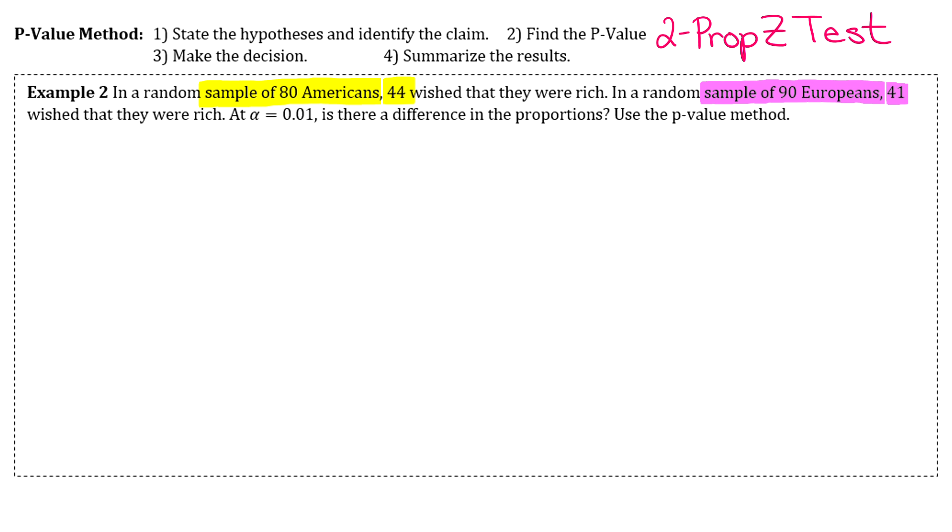Step one: our hypotheses. Our null hypothesis is always going to be that p1 equals p2. The question wants to know if there is a difference in them, so for the alternative I'll say that p1 does not equal p2, and I will label that one as the claim.